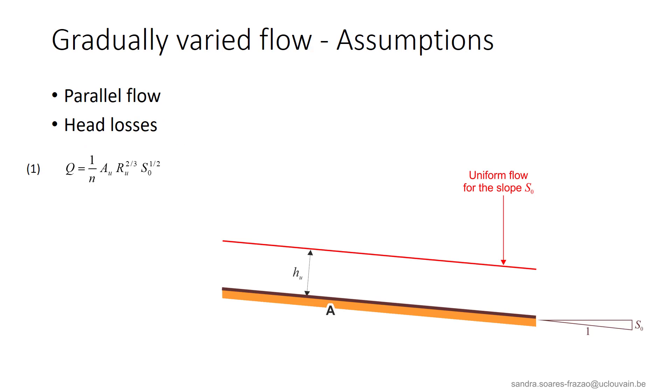So, we consider the illustrated flow with the bed slope S0 here. We can calculate the uniform flow depth corresponding to this bed slope with equation 1 here, and we find the red line that is parallel to the bed. In the equation, AU and RU represent the wetted area and the hydraulic radius respectively, corresponding to the uniform depth HU for the discharge Q. If the actual water surface profile in this channel is the blue line here, with a depth H at section A that is larger than HU,